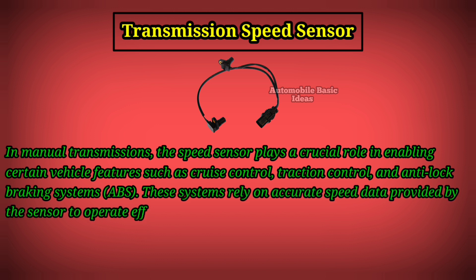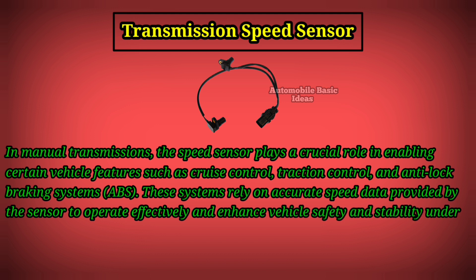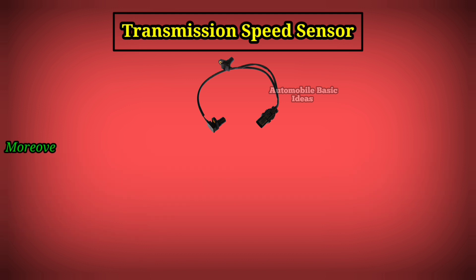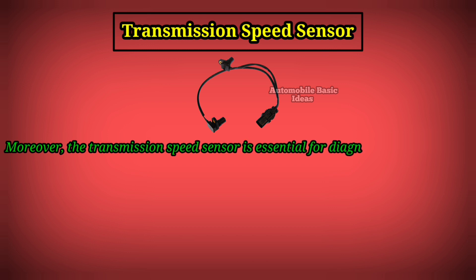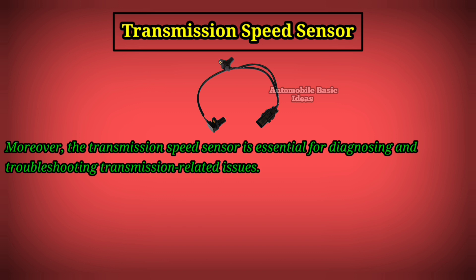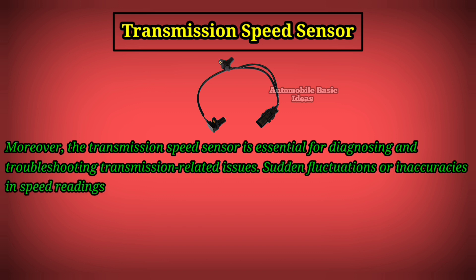These systems rely on accurate speed data provided by the sensor to operate effectively and enhance vehicle safety and stability under different driving conditions. Moreover, the transmission speed sensor is essential for diagnosing and troubleshooting transmission-related issues.